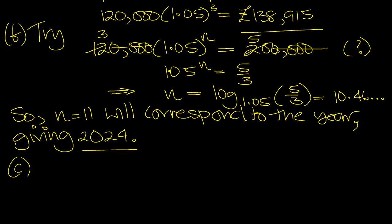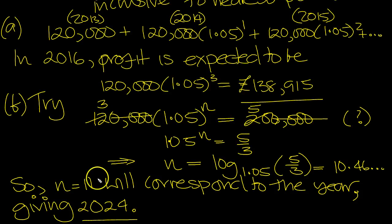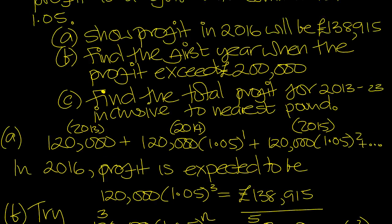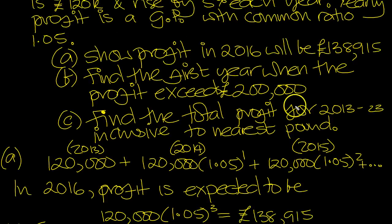Now we're asked to find... That was the... N is 11. So that would be the term. N is 11. So now we need the profit from 2013 to 2023. Here, there's 11 terms. From that term to that term. It's 11 terms in the sequence.